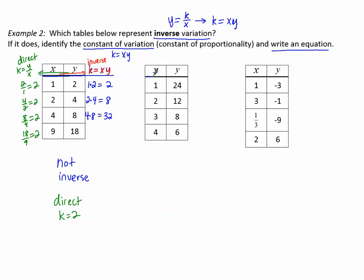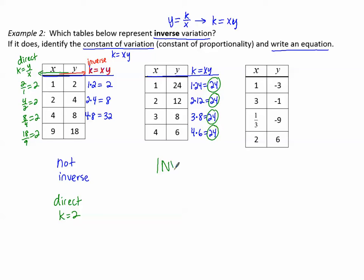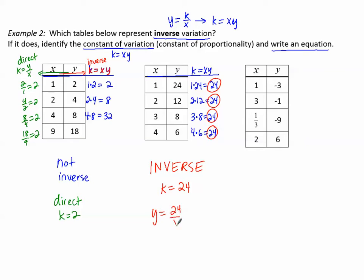Next table: let's find k as x times y. One times 24 is 24, two times 12 is 24, three times eight is 24, four times six is 24 — the same number every time. So this one is inverse variation with a constant of variation of 24, and the equation is y equals 24 divided by x.